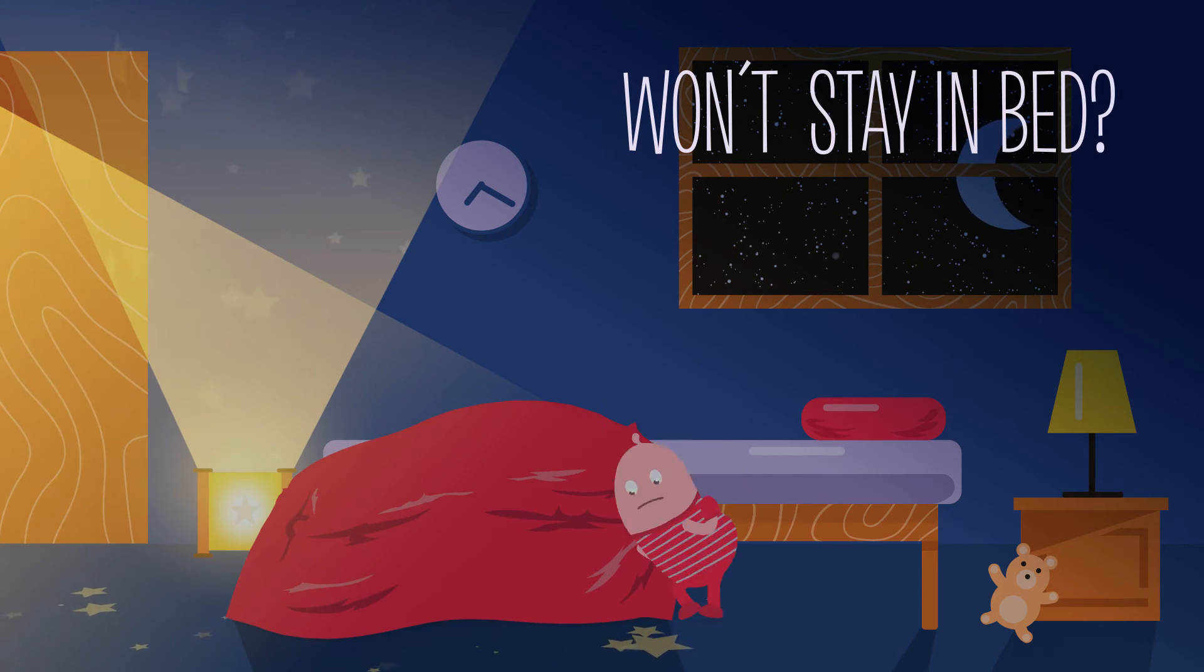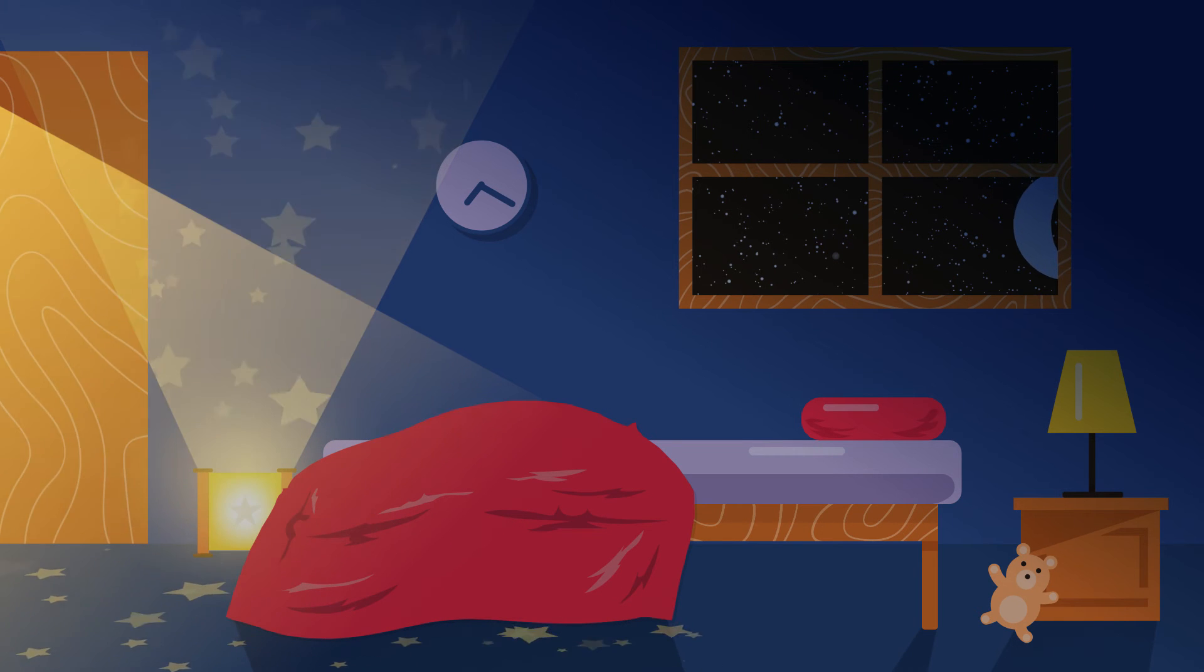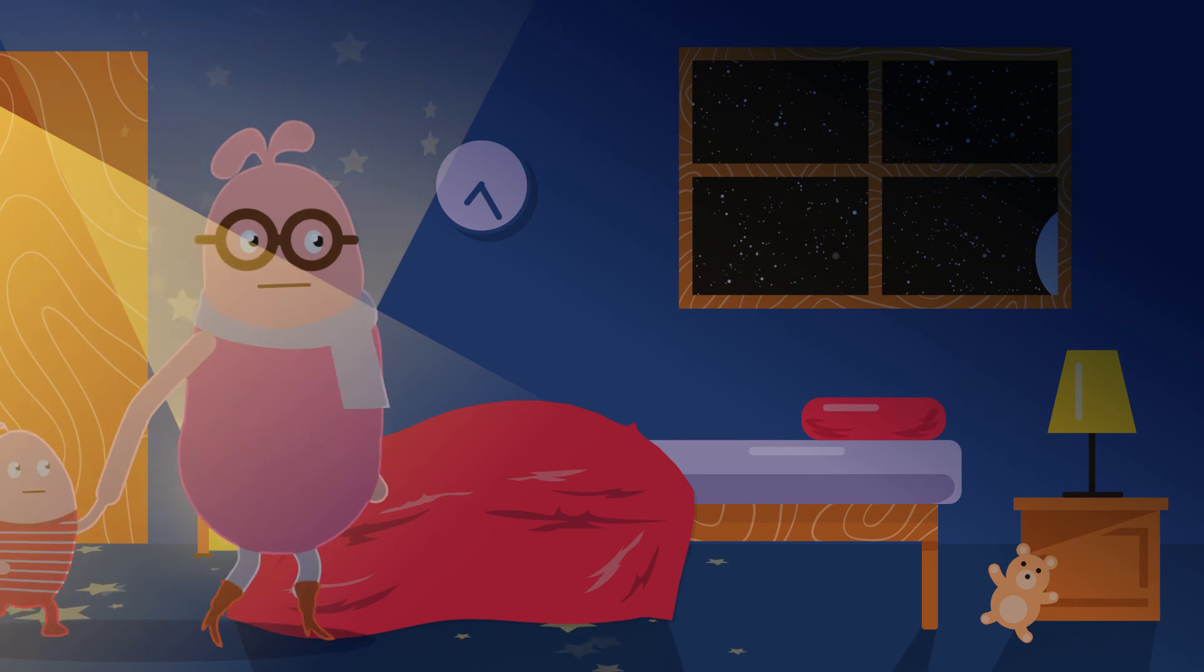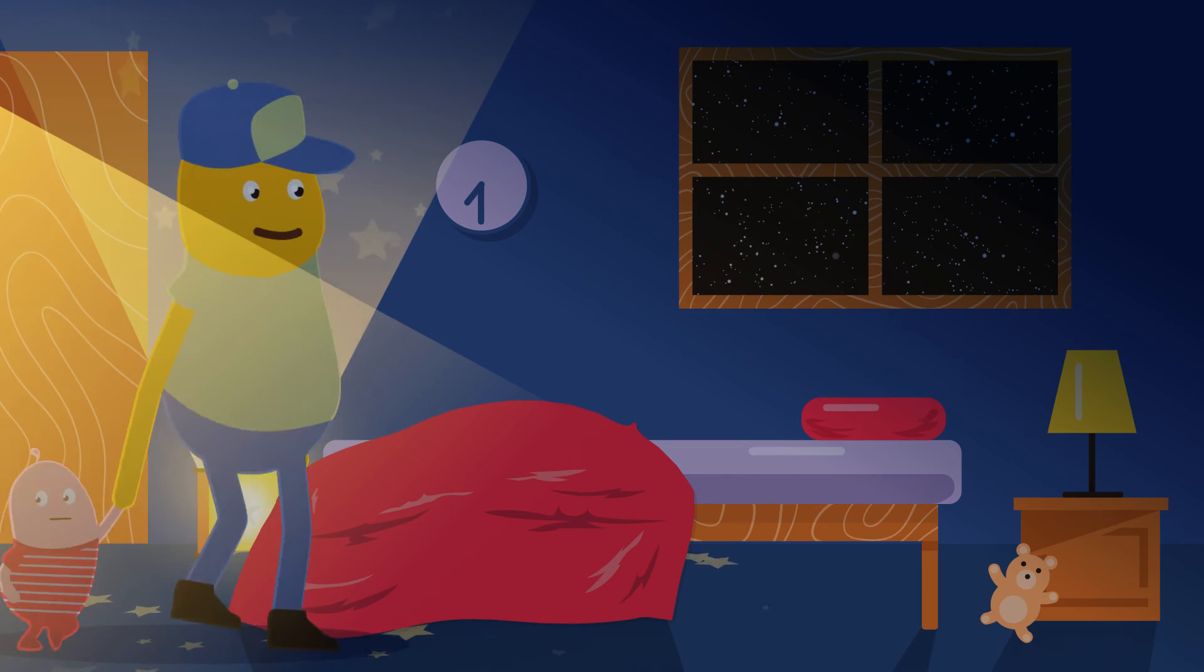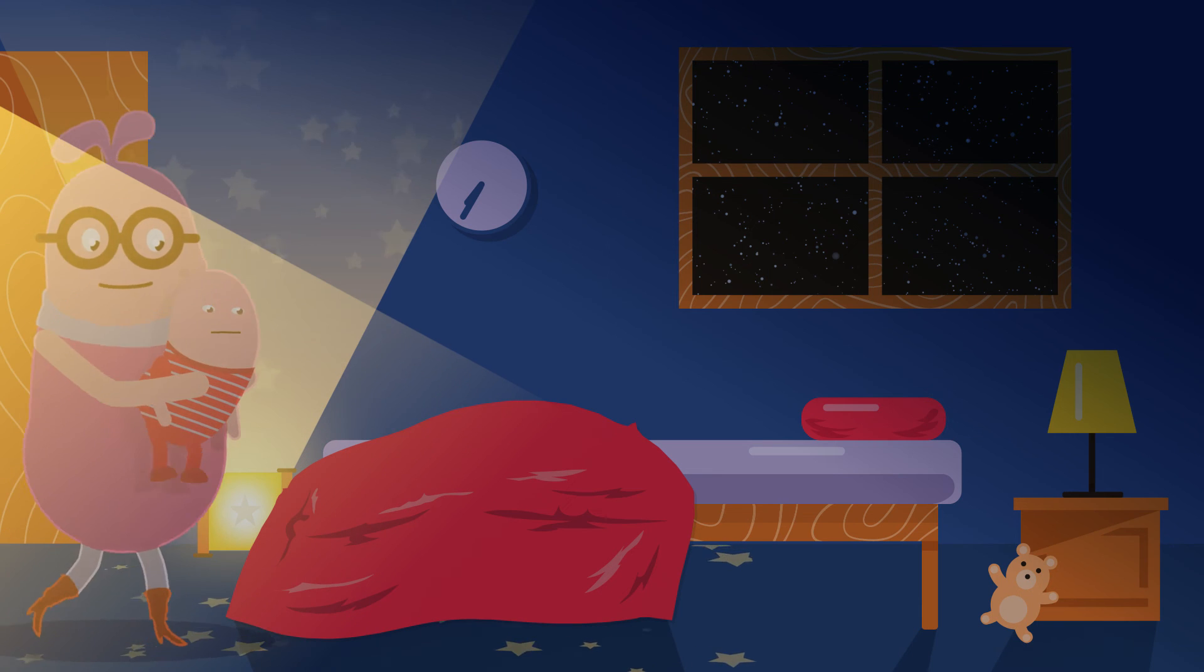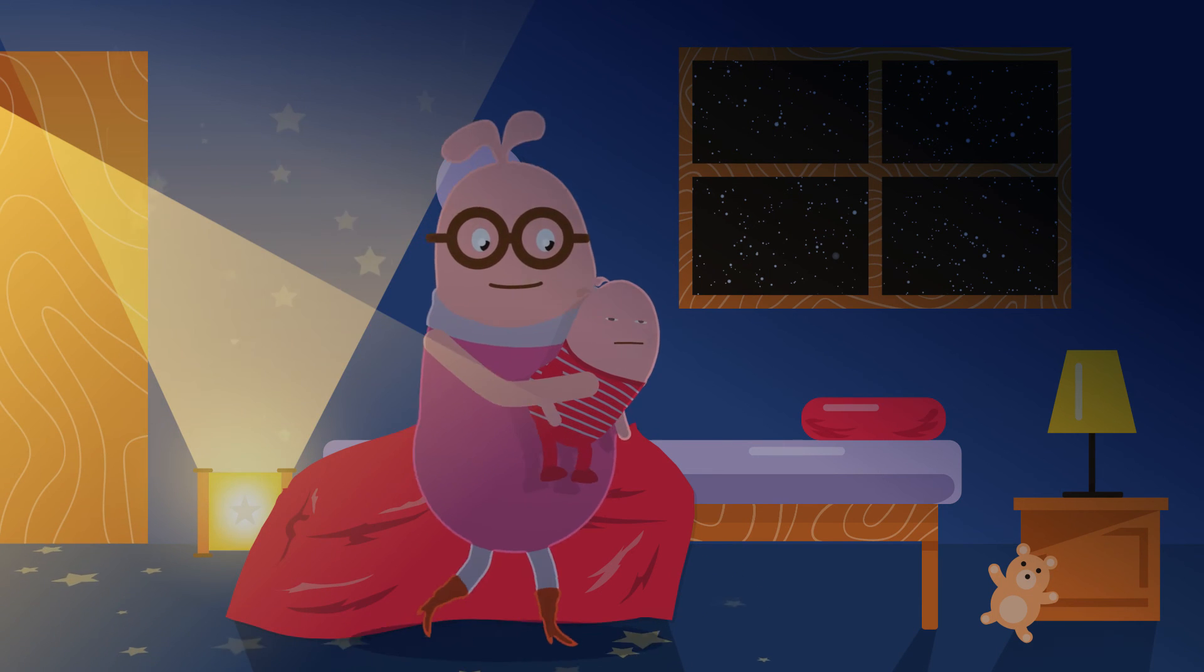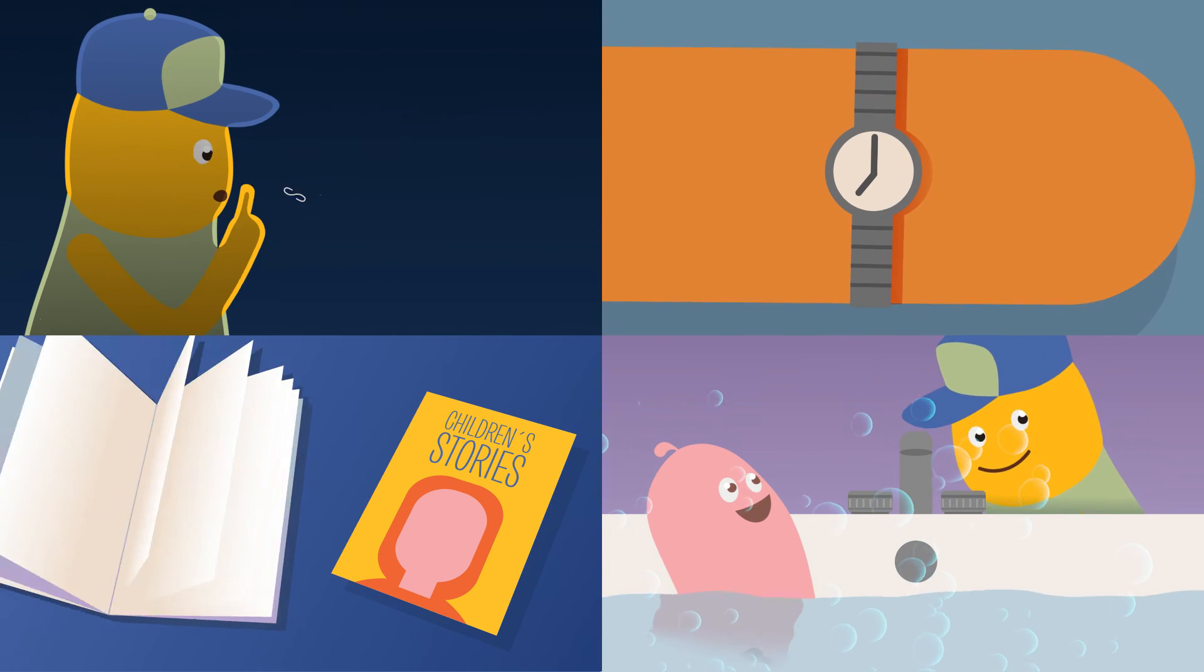What if he won't stay in bed? Here's where patience really pays off. Be like a robot. If your child gets out of bed, take him by the hand and lead him back. Don't reward his behavior with talking or eye contact. Repeat this process as often as necessary, and your child will learn you're serious about bedtime. Be consistent every day so your child knows what to expect.